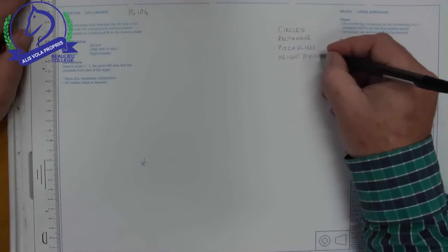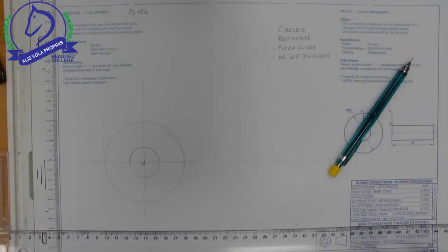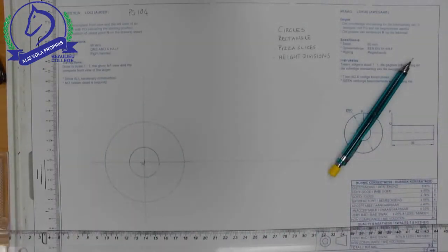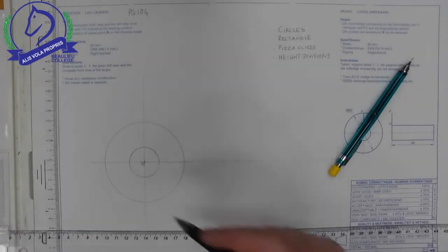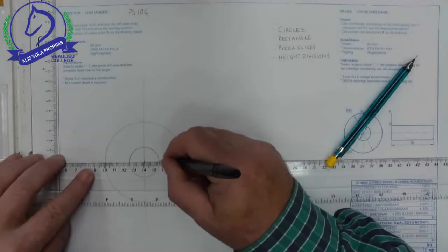Let's get started with our circles. I have done my two circles with a diameter of 80 and a diameter of 30. They don't have the center lines in here, so I'm going to just put those in now.